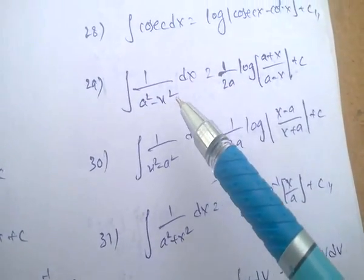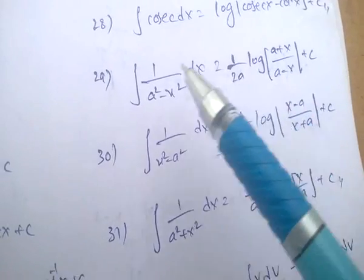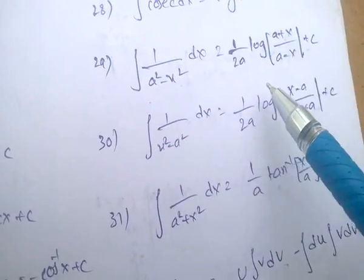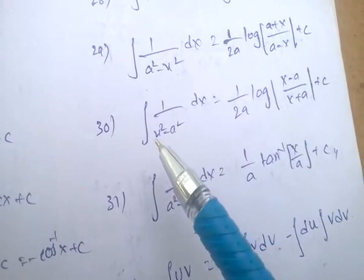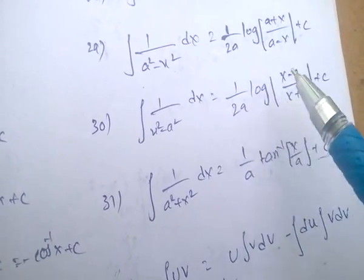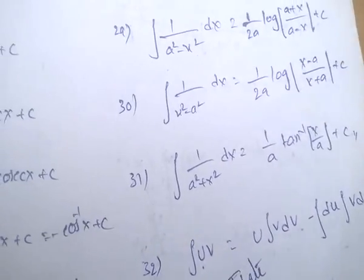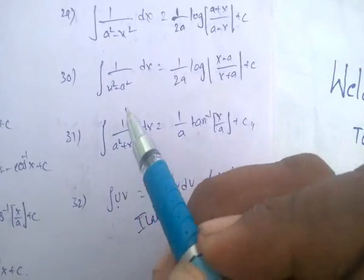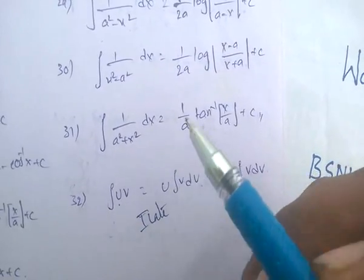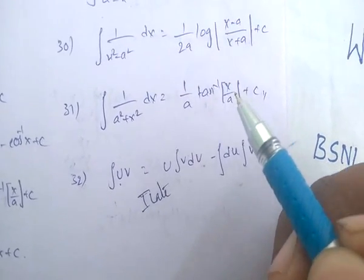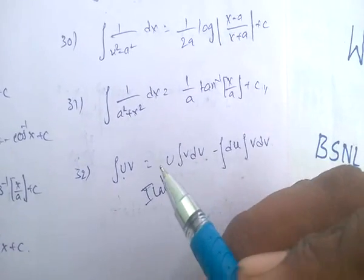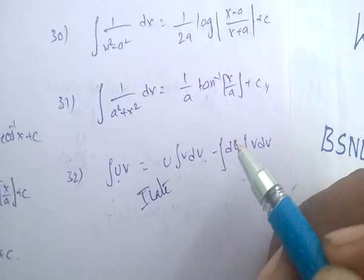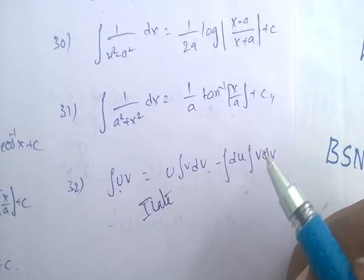Integral of 1 by (a² minus x²) dx equals (1/2a) log of (a+x)/(a−x). Integral of 1 by (x² minus a²) dx equals (1/2a) log of (x−a)/(x+a). Integral of 1 by (a² plus x²) dx equals (1/a) tan inverse of x/a. Integral of u·v dx equals u times integral of v dx minus integral of (du/dx times integral of v dx) dx.